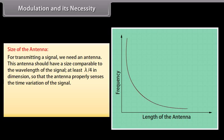For transmitting a signal, we need an antenna. This antenna should have a size comparable to the wavelength of the signal — at least λ/4 in dimension — so that the antenna properly senses the time variation of the signal. For an EM wave of frequency 30 kHz, the wavelength λ is 10 km. It is not possible to construct and operate such a long antenna.